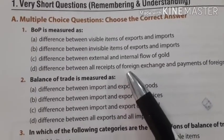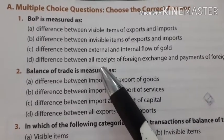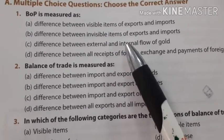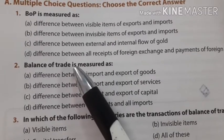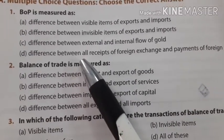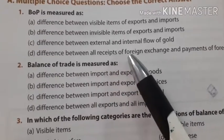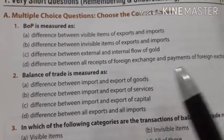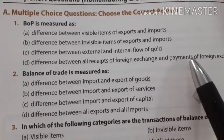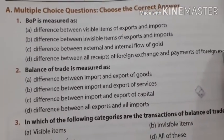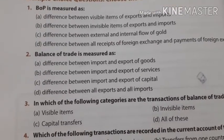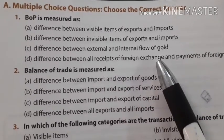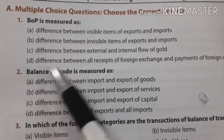So what is BOP? It is the difference between visible, invisible, or external and internal — we include all these things. The answer is the difference between all receipts of foreign exchange and payment of foreign exchange. BOP is a monetary statement of monetary transactions of a country with the rest of the world, so it includes all receipts of foreign exchange. D is the right answer.